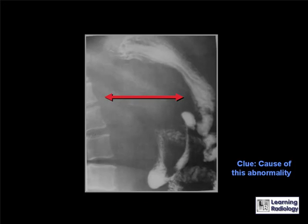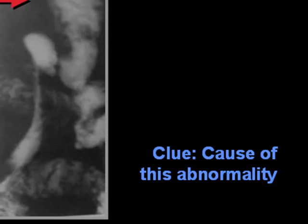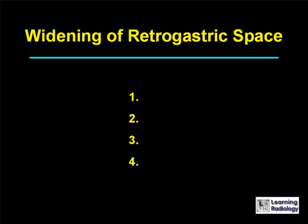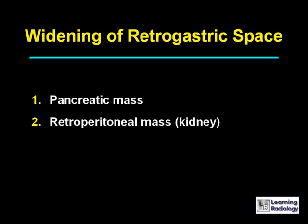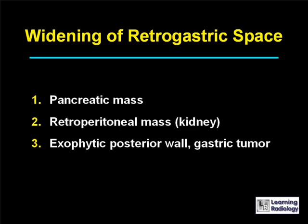The next differential diagnosis is widening of the retro-gastric space. There are four causes: a pancreatic mass, a retroperitoneal mass not of pancreatic origin (such as a renal mass or cyst), an exophytic posterior wall gastric tumor, or an aortic aneurysm.